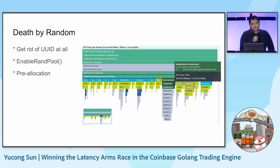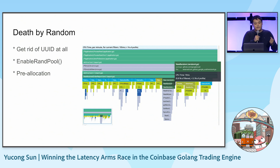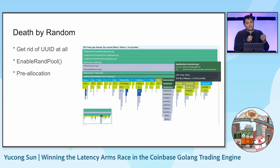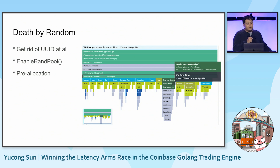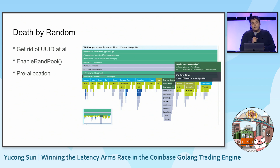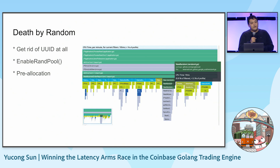Another interesting problem we faced involves random number generation. In many places in our system, we need to generate UUIDs. UUID, by default, reads from /dev/urandom, which is a limited resource. When you have a high-throughput loading scenario, you want to do some optimization — like pre-allocation and enabling pooling of the random source.